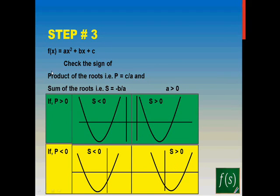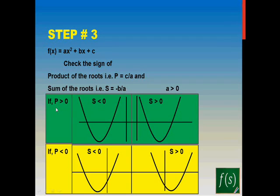Step 3: check for the sign of the product and the sum. The product of the roots is c/a and the sum of the roots is −b/a. I have plotted these graphs for a > 0 — you can plot the same graphs for a < 0 by inverting them upside down. Case 1: if your product is greater than zero, either both roots are positive or both roots are negative — they either lie on the left side or both on the right side of the y-axis.